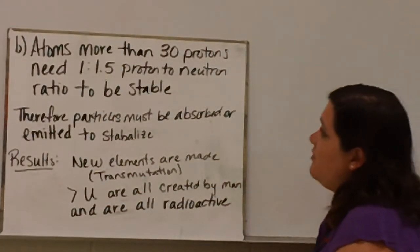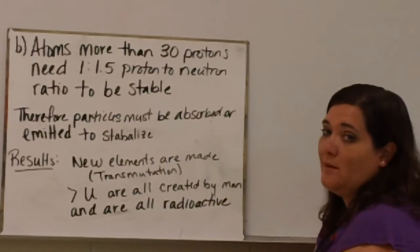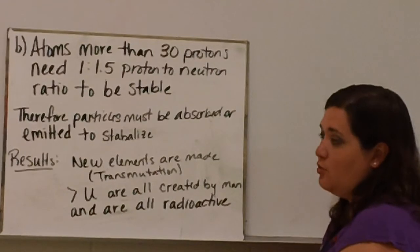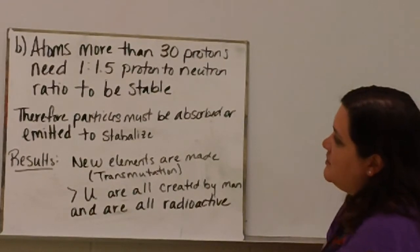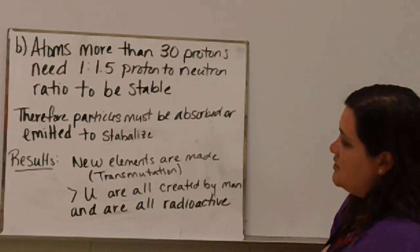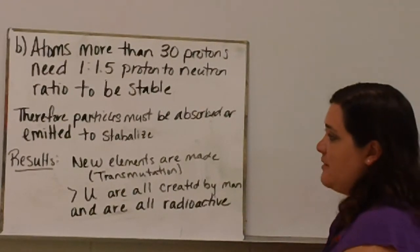Atoms that have more than 30 protons have to have a one-to-one-point-five proton-neutron ratio. The larger atoms can hold more mass. So one-to-one-point-five proton-neutron ratio to be stable. Therefore, particles have to be absorbed or emitted in order to stabilize.